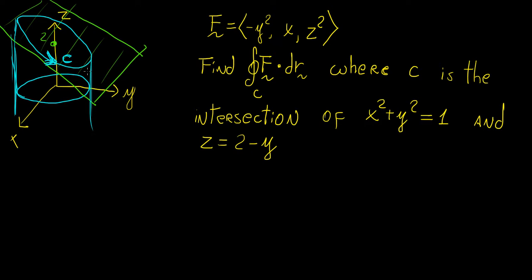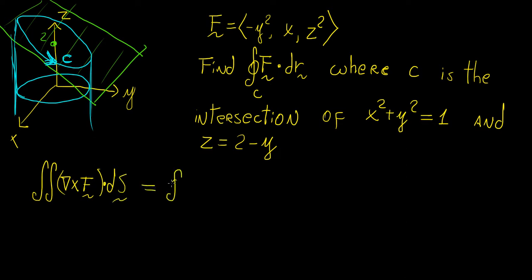So instead of evaluating the line integral directly, we evaluate the circulation — essentially the curl of F dot the surface S — and this gives us the line integral of the curve C. So we're going to apply Stokes' theorem to simplify this.